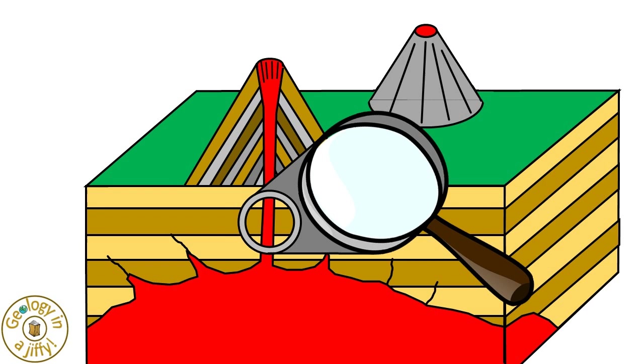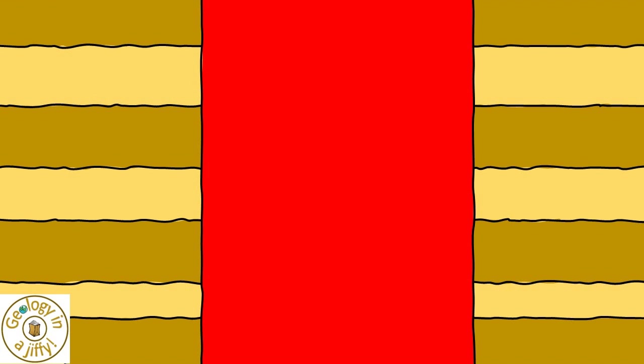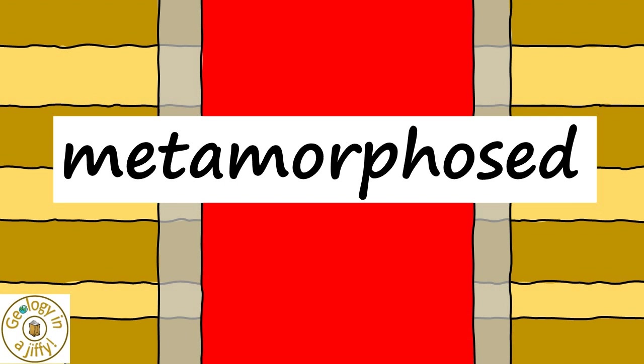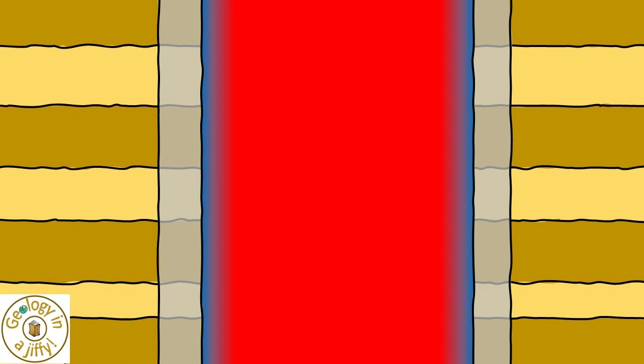Let's study the dike in more detail. Here we have the original layers of rock in the crust, and here we now have our dike intruded upwards — it cuts across the layers. Due to the magma being hot, this heat flows into the host country rock, resulting in the country rock that is in contact with the dike being metamorphosed by the intense heat and pressure of the magma within the dike.